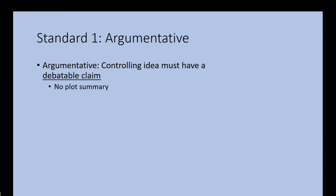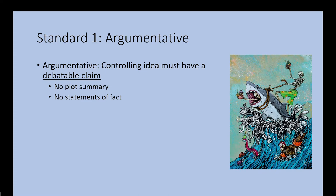Let's start with number one, which is to be argumentative. To be argumentative means that your controlling idea must be debatable — it cannot be a description of a fact. In literature, what is factual are the events of the plot. So we're not going to be having plot summary as our overall argument. Of course, we can leverage the plot towards some other argument, but you cannot use plot summary as your sole goal for the paper. And you want to avoid statements of fact as well.